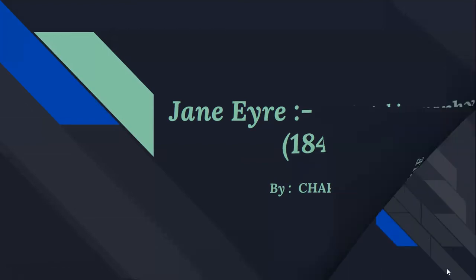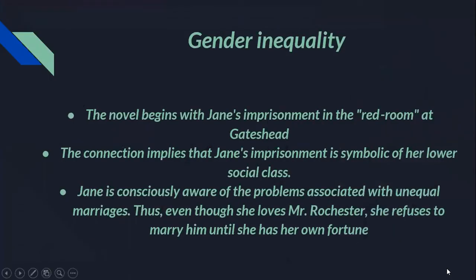Here are some major themes of the novel. The first is gender inequality. Alongside Bronte's critique of Victorian class hierarchy is a subtle condemnation of gender inequalities during the time period. The novel begins with Jane's imprisonment in the Red Room at Gateshead, and later Bertha's imprisonment in the attic at Thornfield is revealed. The connection implies that Jane's imprisonment is symbolic of her lower social class, while Bertha's confinement is symbolic of Victorian marriage — all women who marry under unequal circumstances will eventually be confined and oppressed by their husbands.